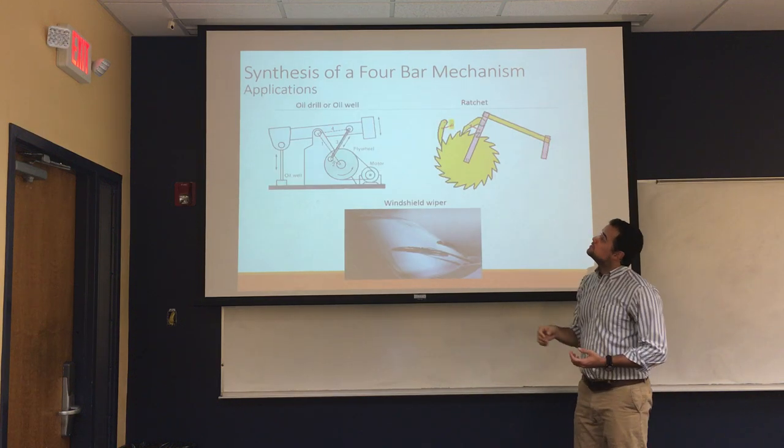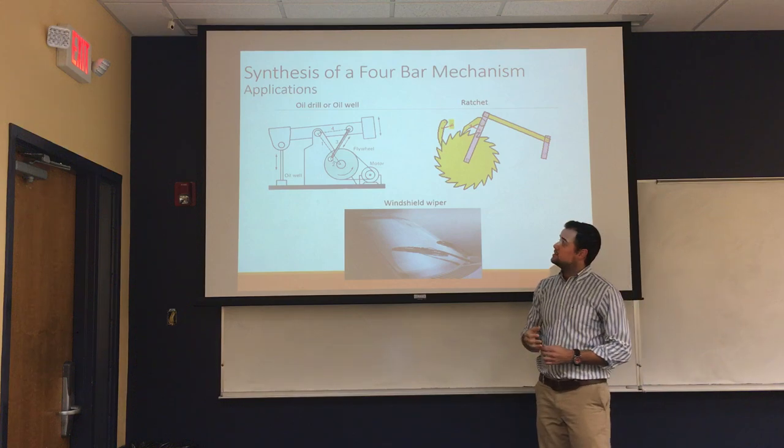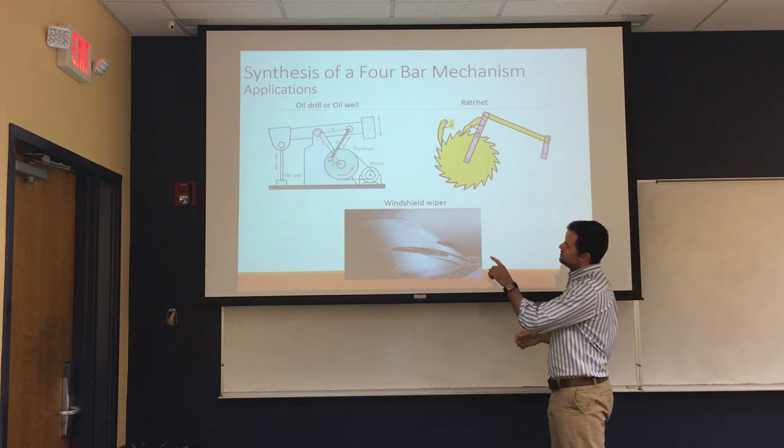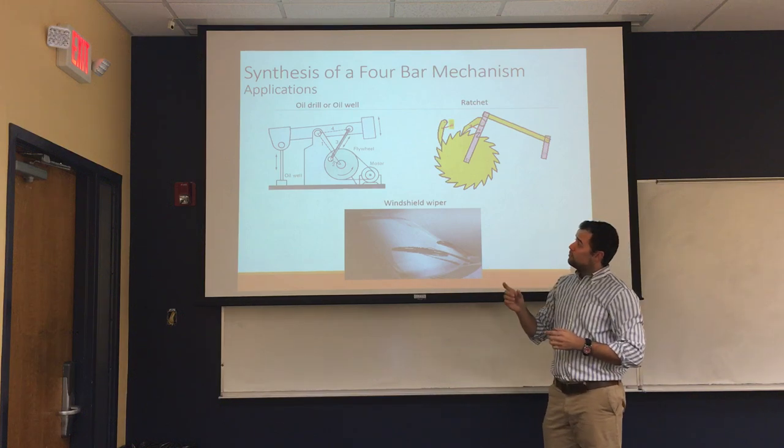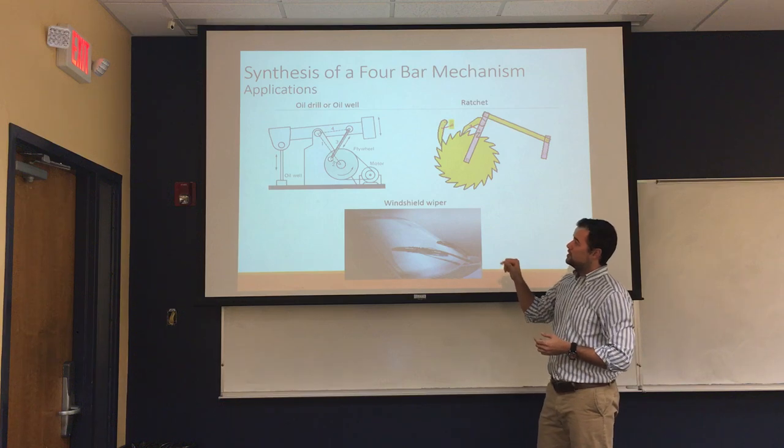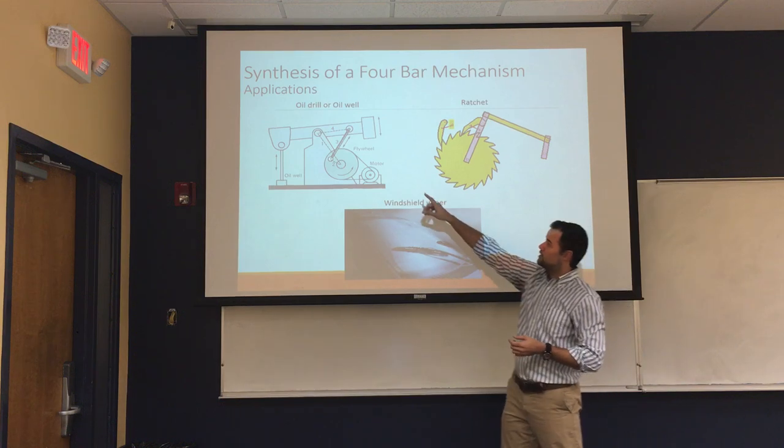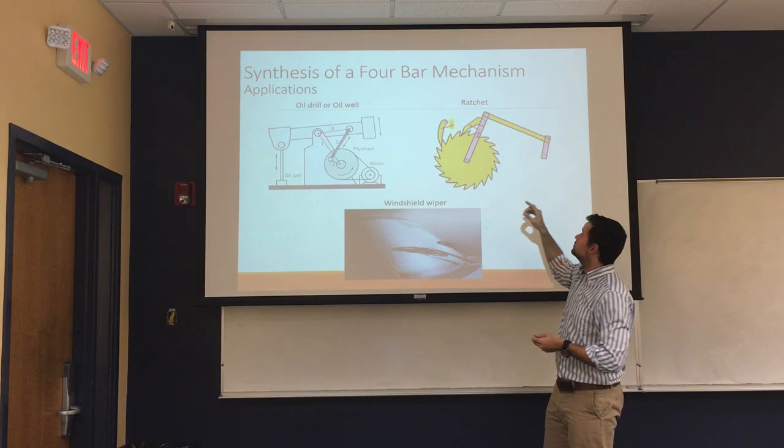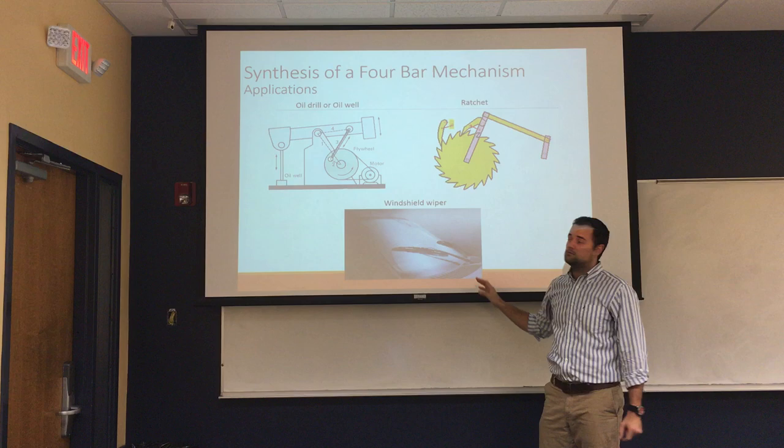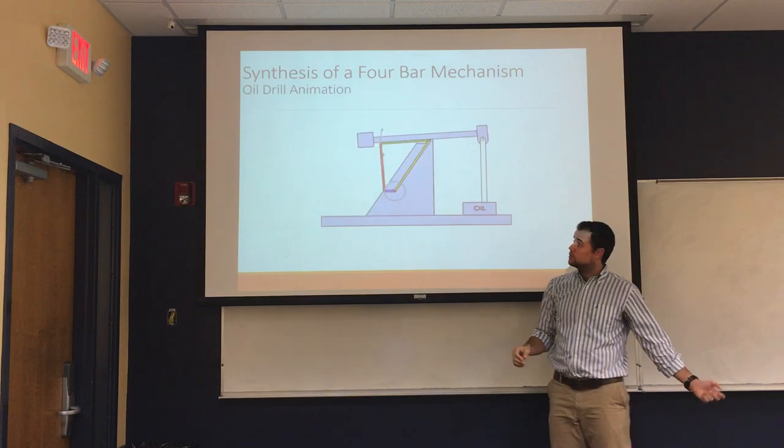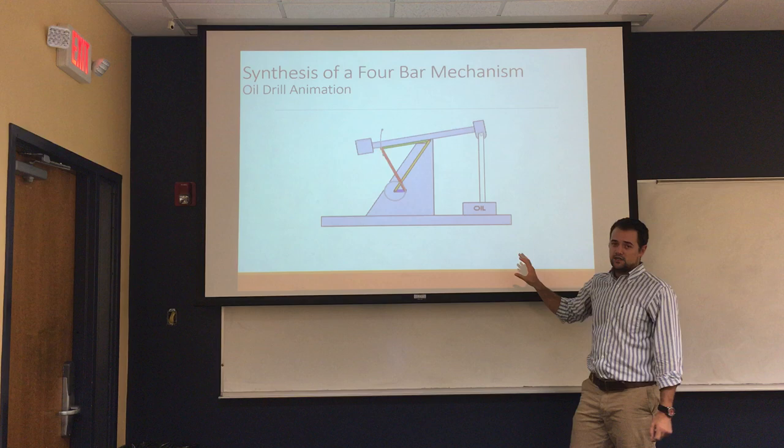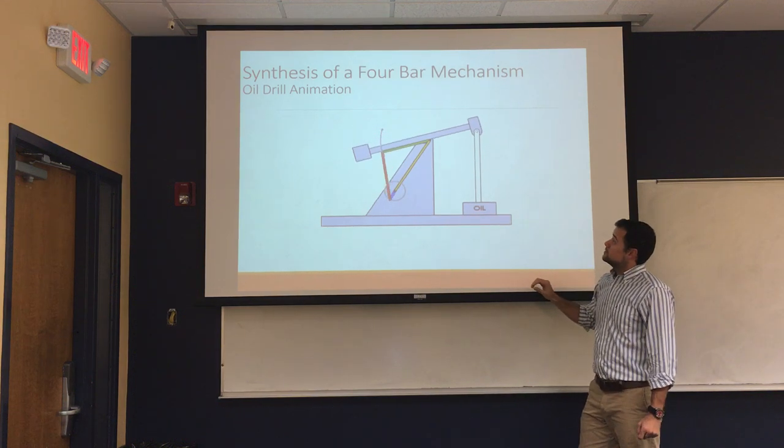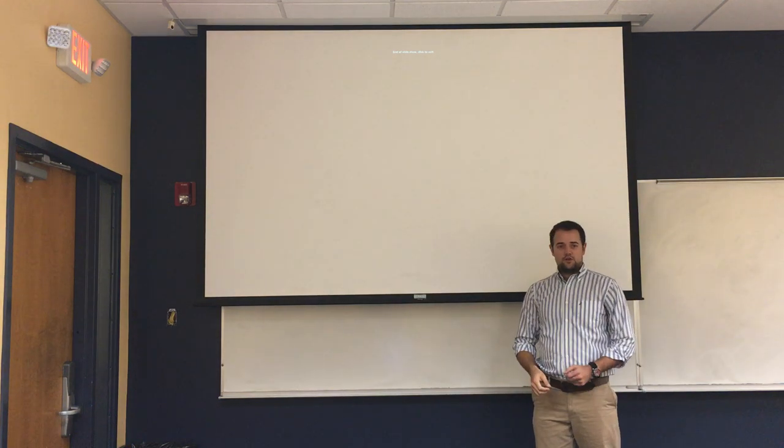So, nowadays we have several applications for our crank rocker mechanism. We can have an oil drill, we can have a ratchet and a windshield wiper. When this small crank just moves and rotates, it's going to give us the rocker to move up and down so we can move the tools of each mechanism. So, here is a little animation of an oil drill. That's not the one we chose for our applications. So, that's going to be our representation. Thank you for your time.